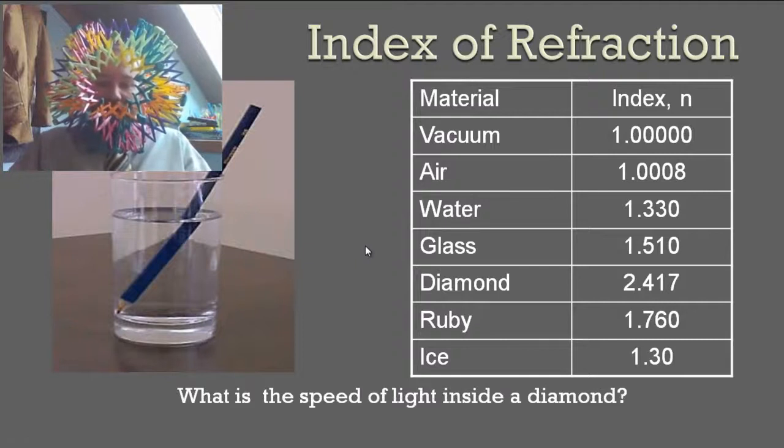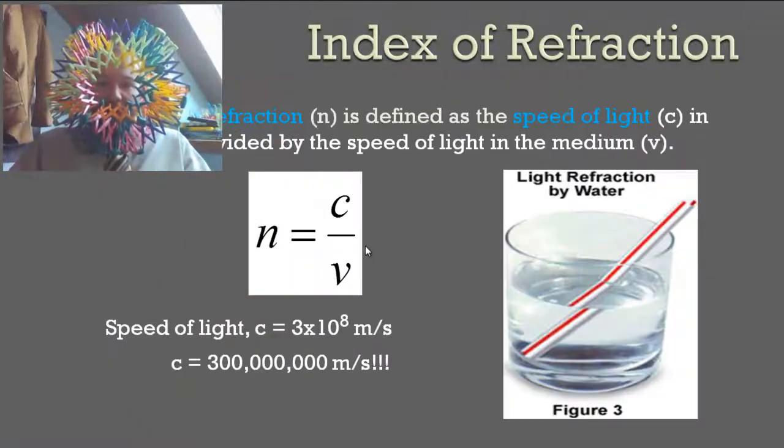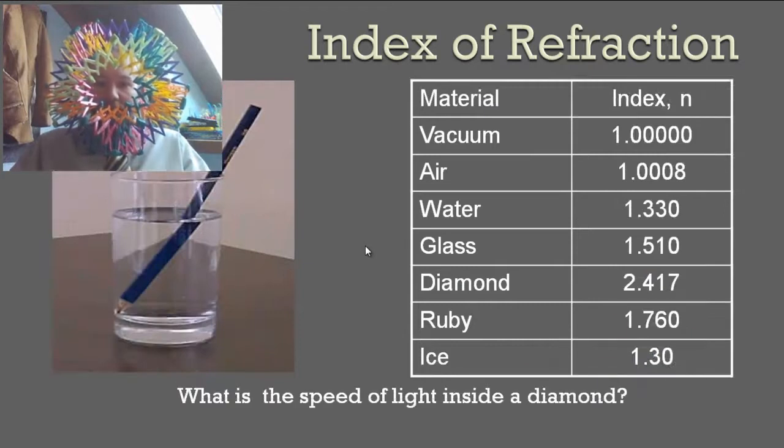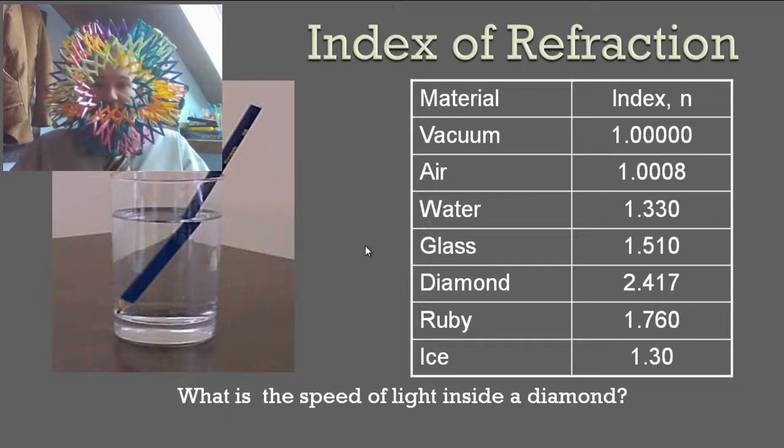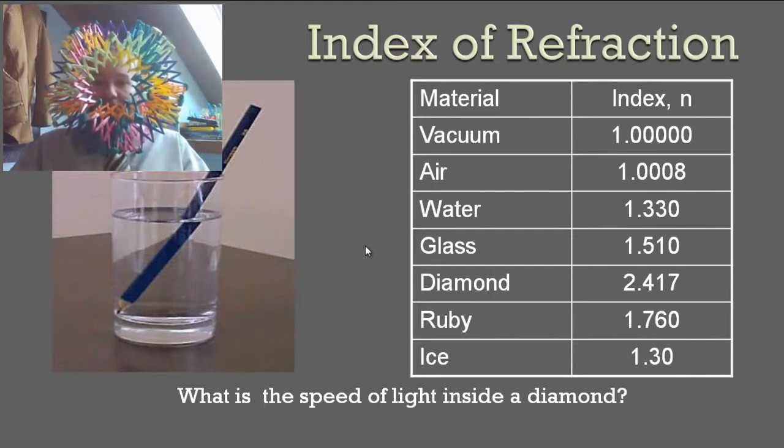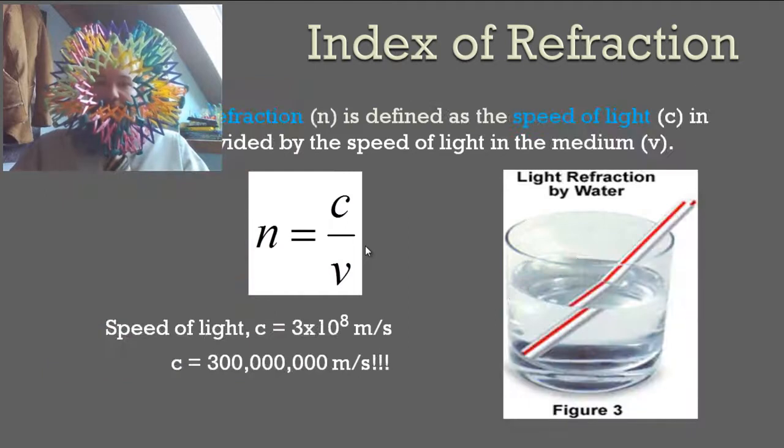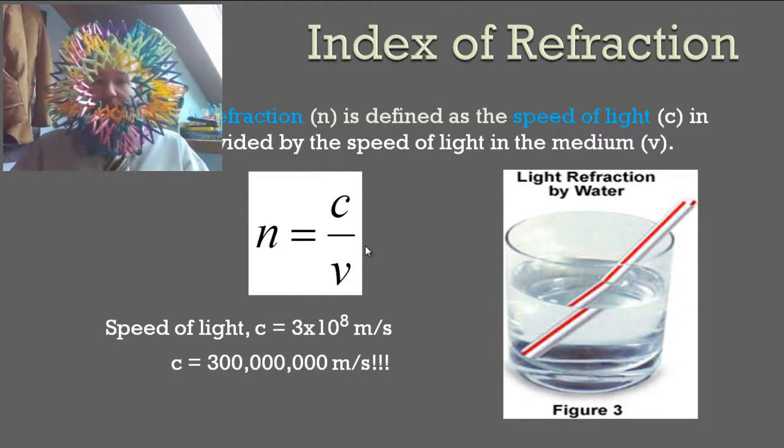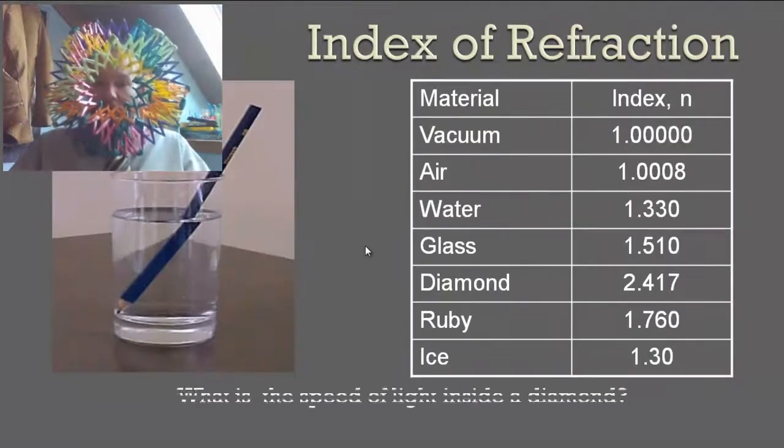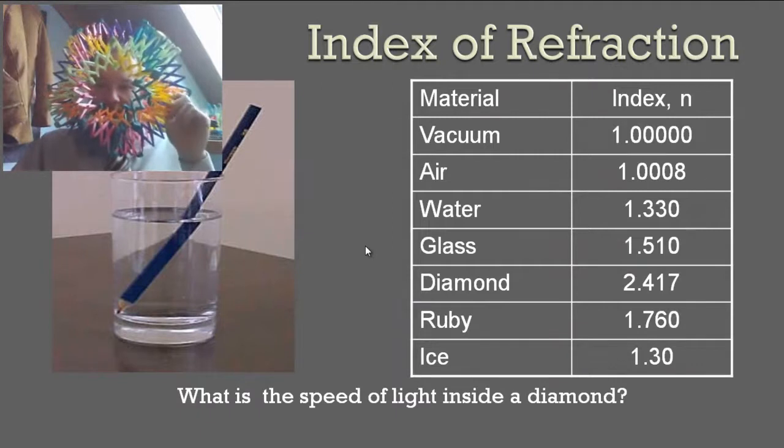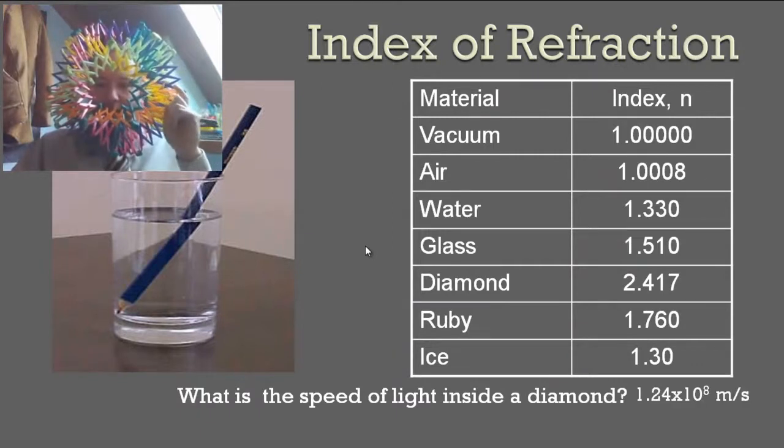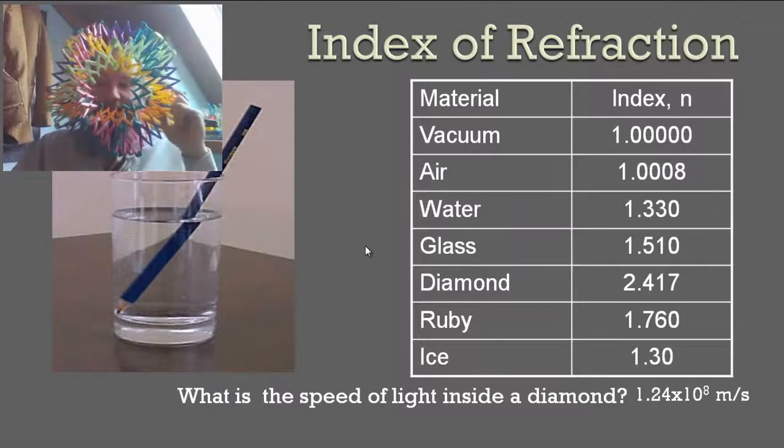So knowing the last equation, which was n equals c over v, what is the speed of light inside of a diamond? So you take the speed of light, you rearrange this equation to solve for v, so you get v equals c over n. So you do 3 times 10 to the 8 divided by 2.417, and you get 1.24 times 10 to the 8 meters per second.